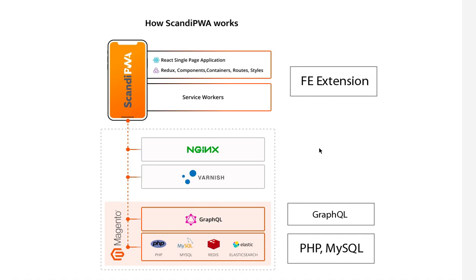That's pretty much it. You have one extension for Scandi PWA — we can call it the frontend extension. It's written in React and uses GraphQL queries to get data from a server and to send data there. And you have a traditional Magento extension. Because we are talking about decoupling systems, it makes sense that we have two different packages — one for frontend and another for backend.